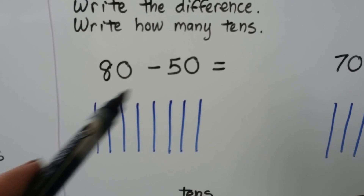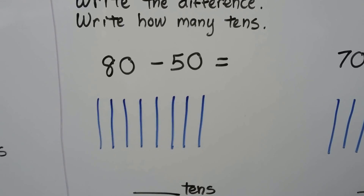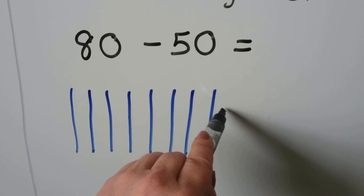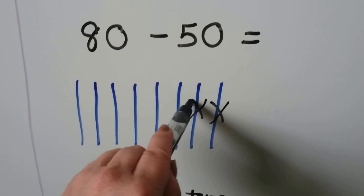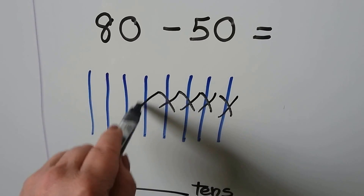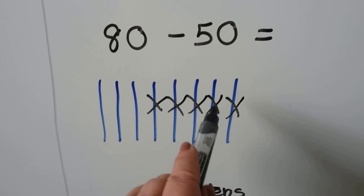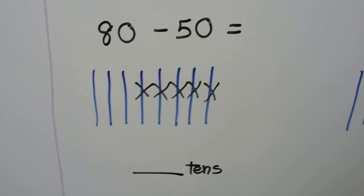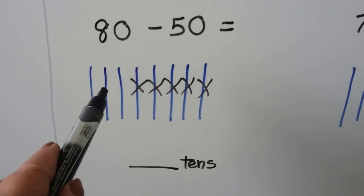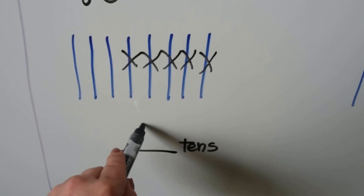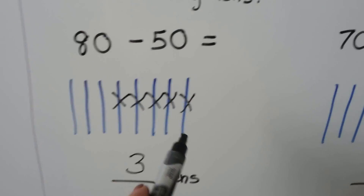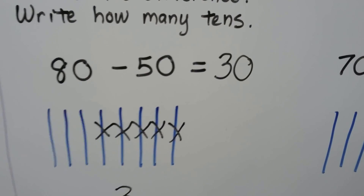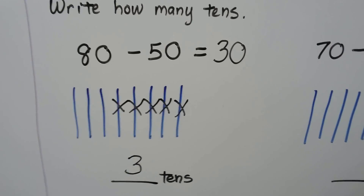We need to take away fifty. Fifty is five tens, so let's take away five of these ten bars: one, two, three, four, five — taking away ten, twenty, thirty, forty, fifty. How many tens are left? One, two, three tens are left. Three tens are equal to thirty. Eighty minus fifty is equal to thirty.